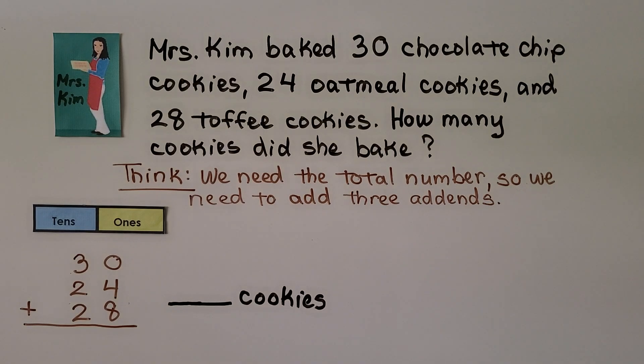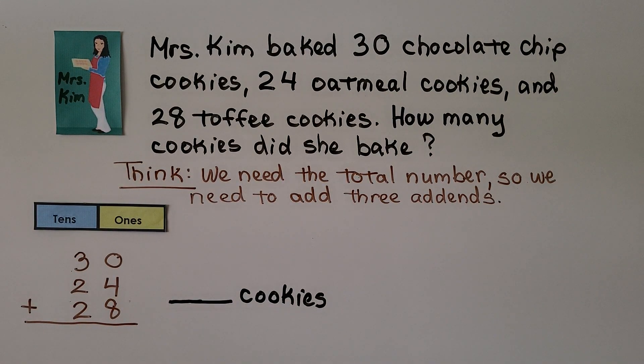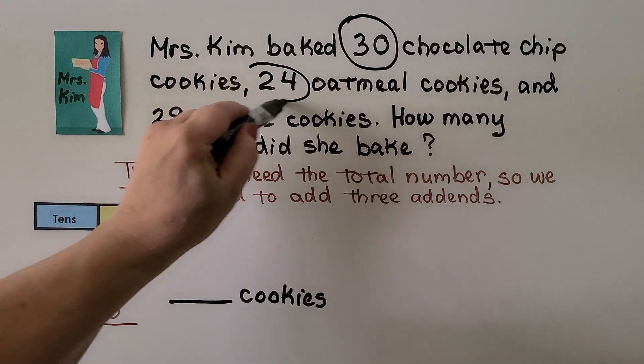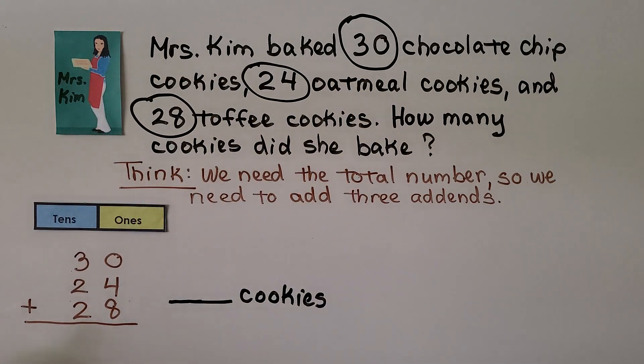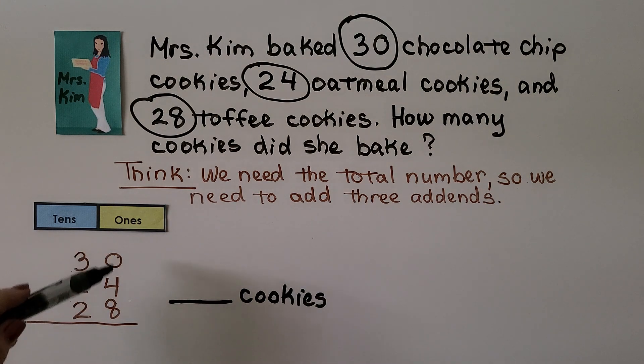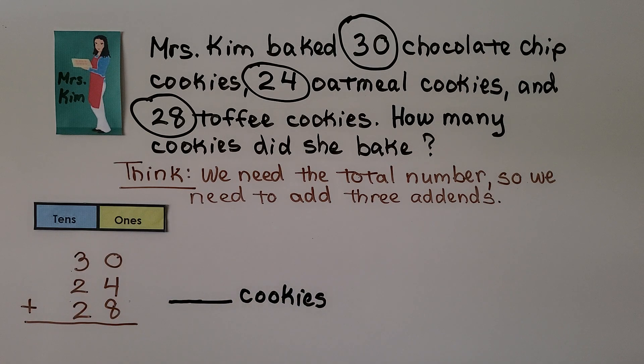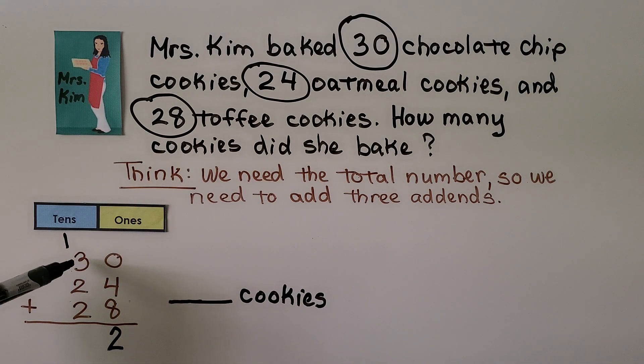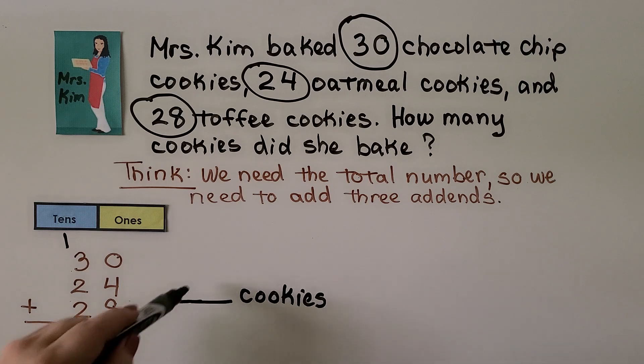Mrs. Kim baked 30 chocolate chip cookies, 24 oatmeal cookies, and 28 toffee cookies. How many cookies did she bake? We think we need the total number, so we need to add 3 addends. We have 30 chocolate chip, 24 oatmeal, 28 toffee. We add 30 plus 24 plus 28. 0 plus 4 in the ones place is 4. We add 4 plus 8, that's equal to 12. We regroup a 10 and put the 2 down in the ones place. Now we add the tens. We have 3, 4, 5, 6, 7, 8. That means Mrs. Kim baked 82 cookies.